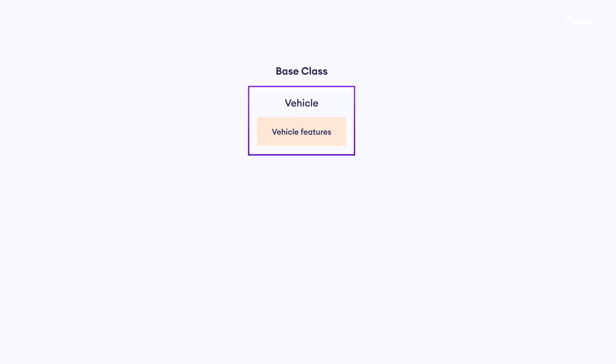Before we learn about Python inheritance, let's see an example of why it is used and what problem it solves. Suppose we are creating a racing game that will have cars and motorcycles. Both cars and motorcycles are vehicles and they will share some common attributes and methods. So instead of creating two independent classes, we can create a vehicle class that shares the common features of both cars and motorcycles.